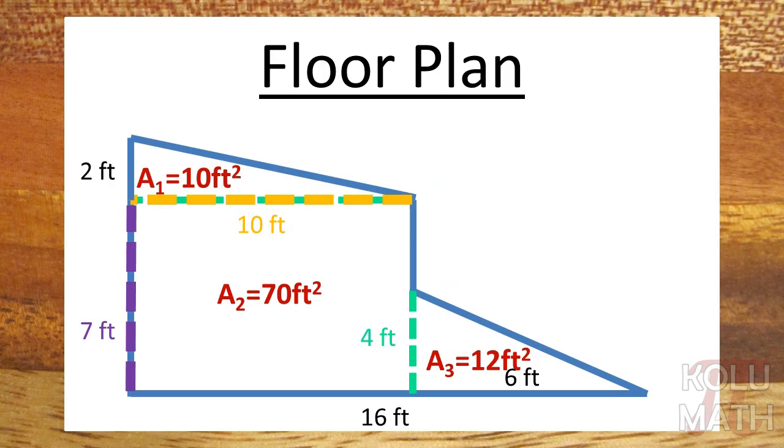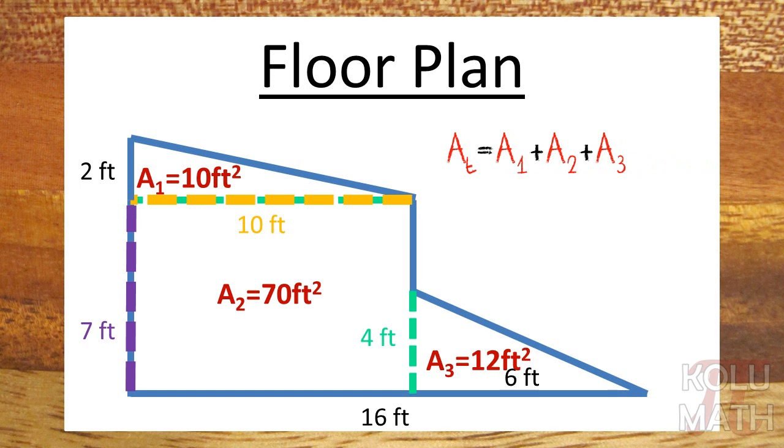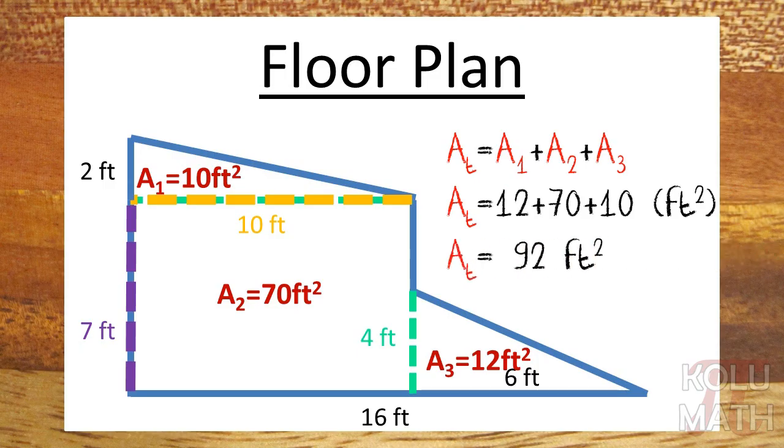Now we can move on to step four, combining the areas. So the area of the total figure will be the area of the first shape, plus the area of the second shape, plus the area of the third shape. Plug them on in and you get 92 feet squared. Mayor is very happy about that. Gives Tyler a high five.